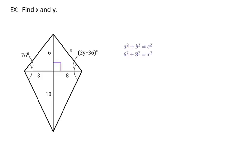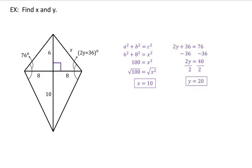a squared plus b squared equals c squared. If I substitute in my variables, 6 squared plus 8 squared is equal to x squared. 6 squared plus 8 squared is 36 plus 64, which is 100. So 100 is equal to x squared. If I take the square root of both sides, then I find that x is equal to 10. Now let's have a look at y. We know that 76 and 2y plus 36 are opposite angles in our kite. We know that those opposite angles are congruent to each other. So we can say that 2y plus 36 is equal to 76. If I subtract 36 from both sides, I find that 2y is equal to 40. I finish out by dividing by 2 so that y is equal to 20.